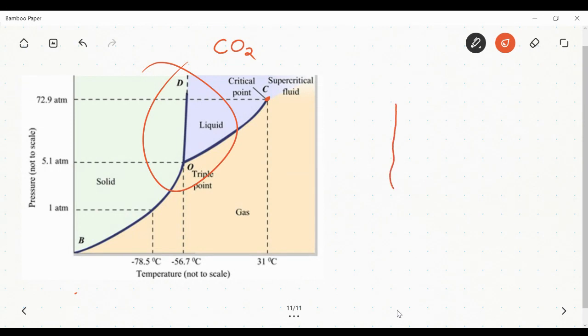With water, when we drew the phase diagram, sorry for my sketch here, that line kind of leaned back to the left. And so what we saw in water is that if you increased the pressure and you moved the particles closer together, they actually became a liquid, right?